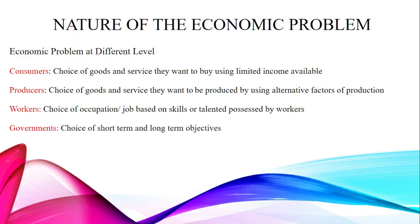The next thing we have is the producer. Producers want to produce everything, but you can't produce everything. You have to use the alternative factors of production. The factors of production themselves are limited in nature, so you have to use them either individually or in some kind of combination, making use of alternative resources in order to make a new product.